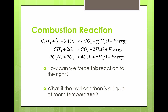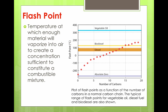What if the hydrocarbon is a liquid at room temperature? Let's talk about what temperature different fuels need to be at so that we can burn them. First, let's define flashpoint: that's the temperature at which there's enough fuel in the air to create a mixture that we can burn if we have an ignition source or a spark. In this diagram, the x-axis shows the number of carbons in the hydrocarbon molecule — as the number of carbons increases, the flashpoint increases.